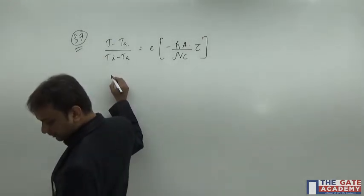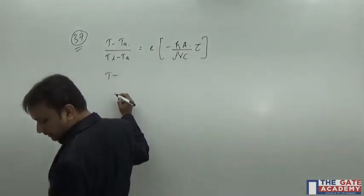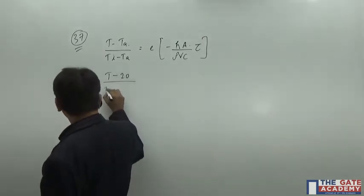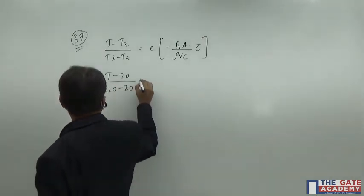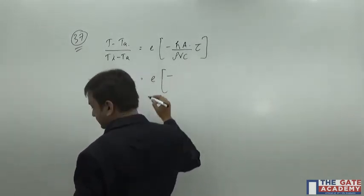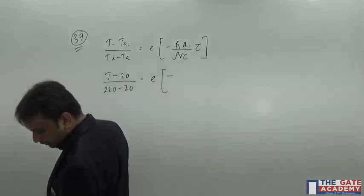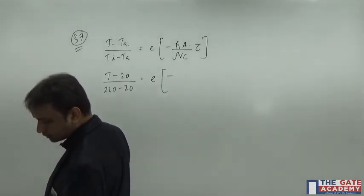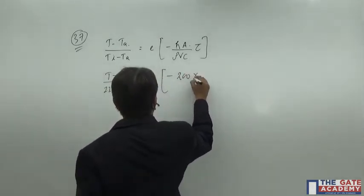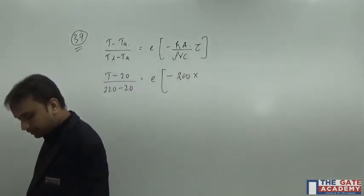The temperature that we need to determine is still unknown, but the ambient temperature is 20 degree Celsius and the initial temperature of the ball was 220 degree Celsius. Exponential minus H, H is the heat transfer coefficient, its value is given as 200 watt per m square Kelvin. It is 200. And what is area? Area of the ball is 4 pi R square.